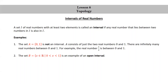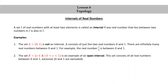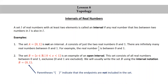The set B, consisting of all real numbers x such that 0 < x < 1, is an example of an open interval. This set consists of all real numbers between 0 and 1 exclusive — by exclusive, I mean that 0 and 1 are excluded. We will usually write the set B using interval notation as (0, 1) in parentheses. The parentheses indicate that the endpoints are not included in the set.